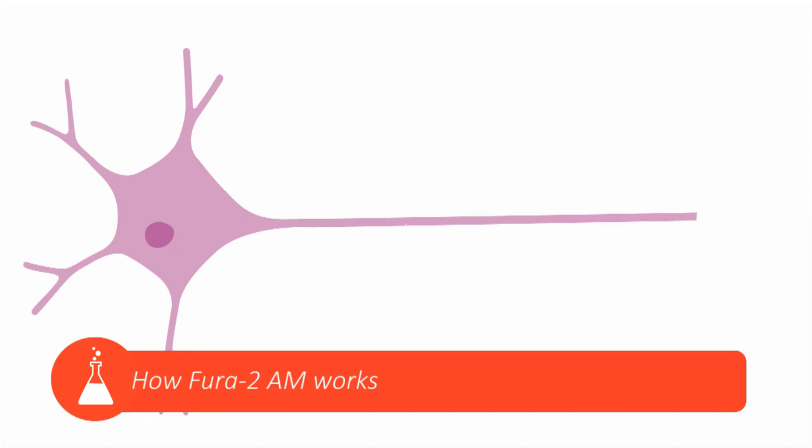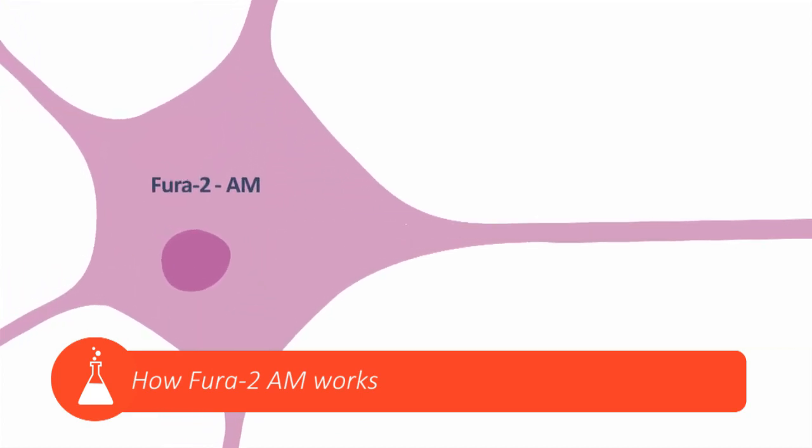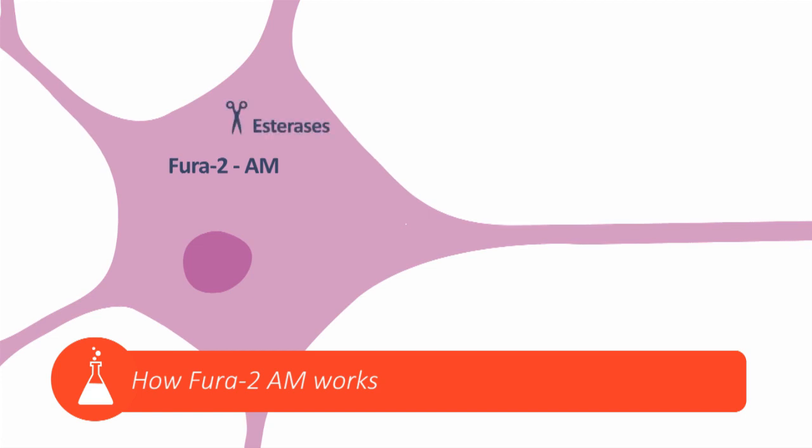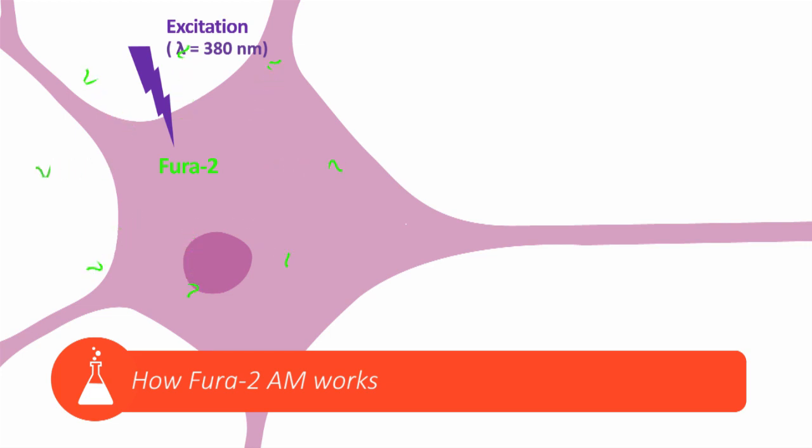FURA-2 AM is a molecule that is liposoluble thanks to the AM group. Once inside the neuron, the FURA-2 AM molecule will lose its AM group through the endogenous esterases that will break up the calcium indicator separating this group. Then, the FURA-2 can no longer exit the neuron without the AM group.